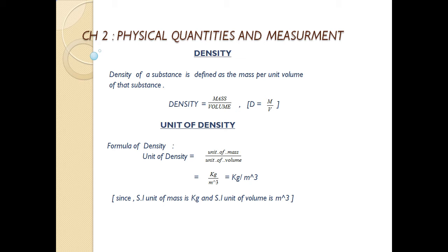What is density? Density of a substance is defined as the mass per unit volume of that substance. So the formula of density is: density is equal to mass upon volume. In short we can write it as d is equal to m upon v.